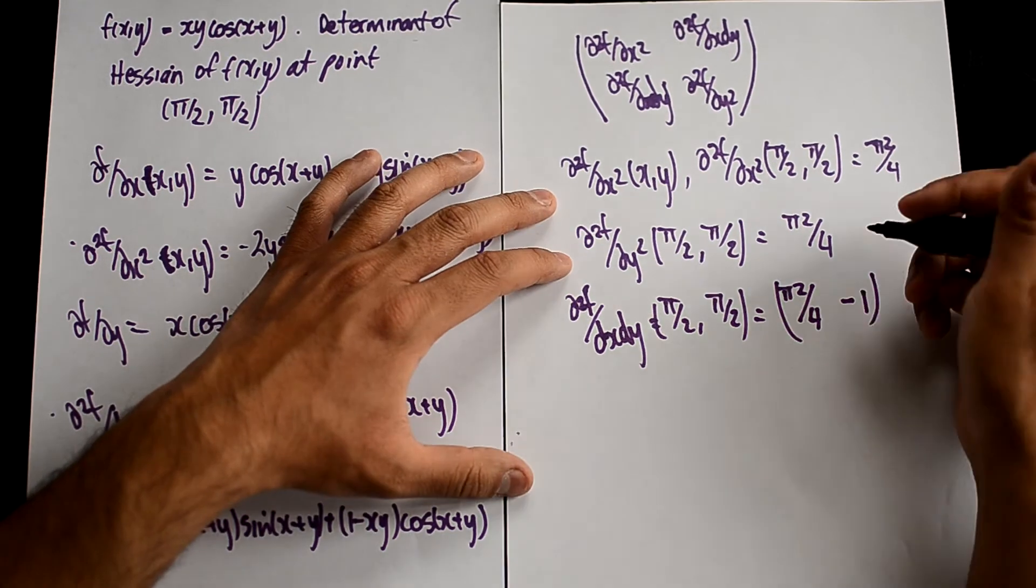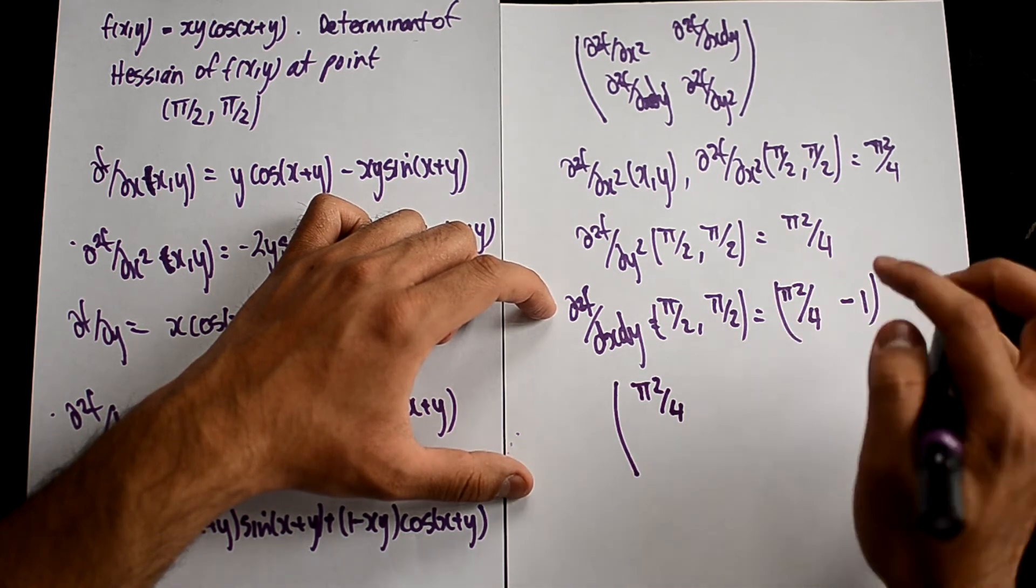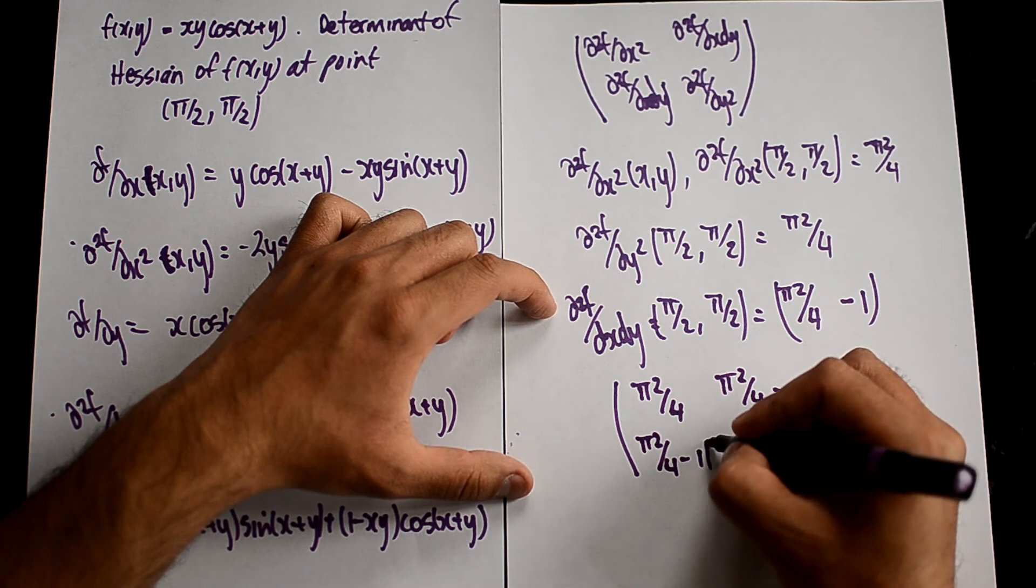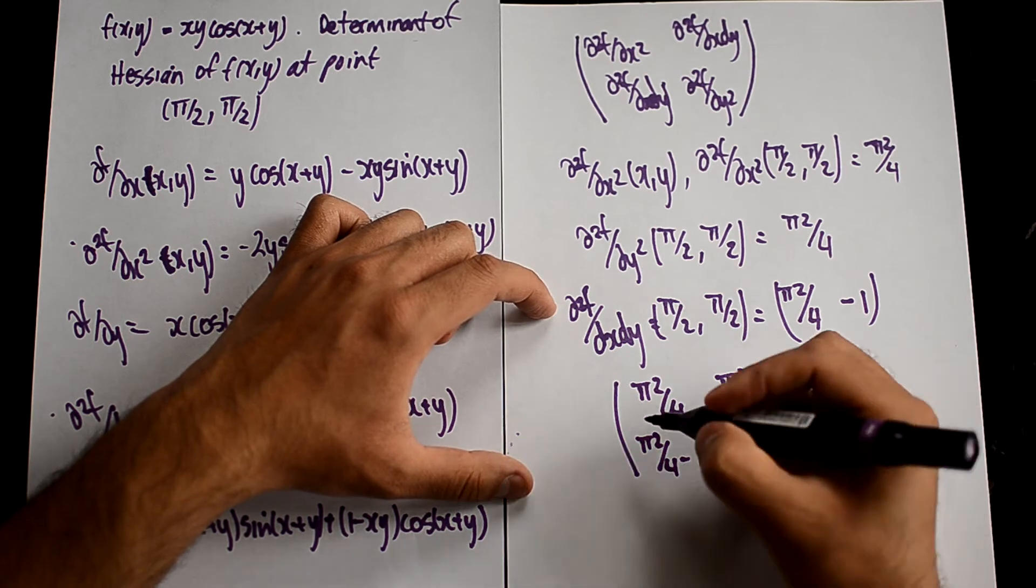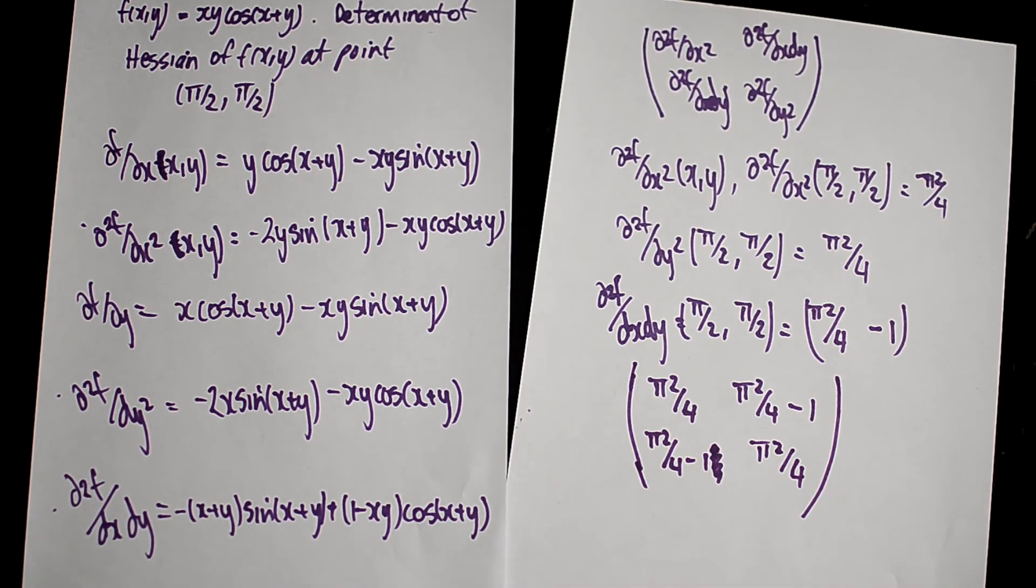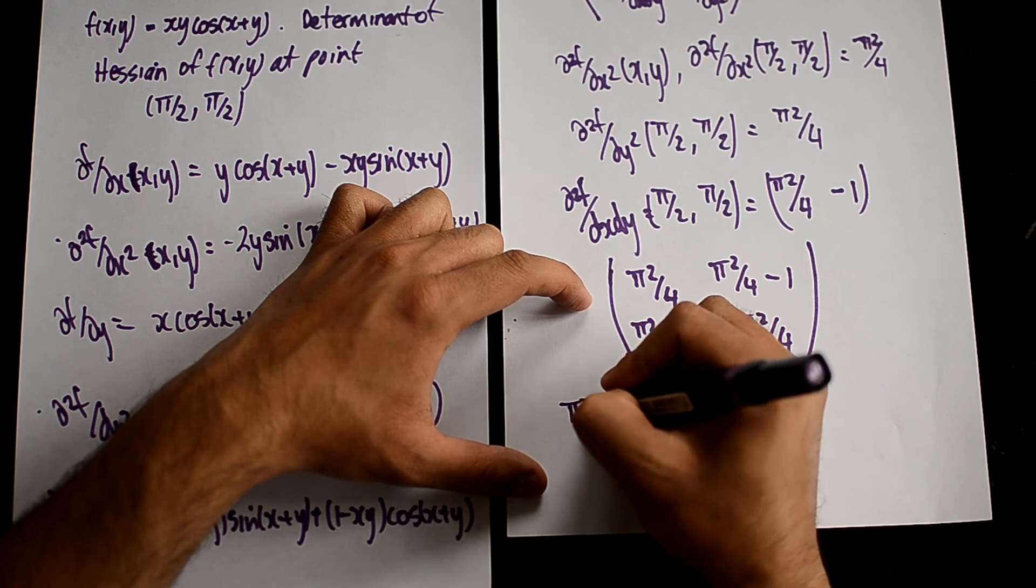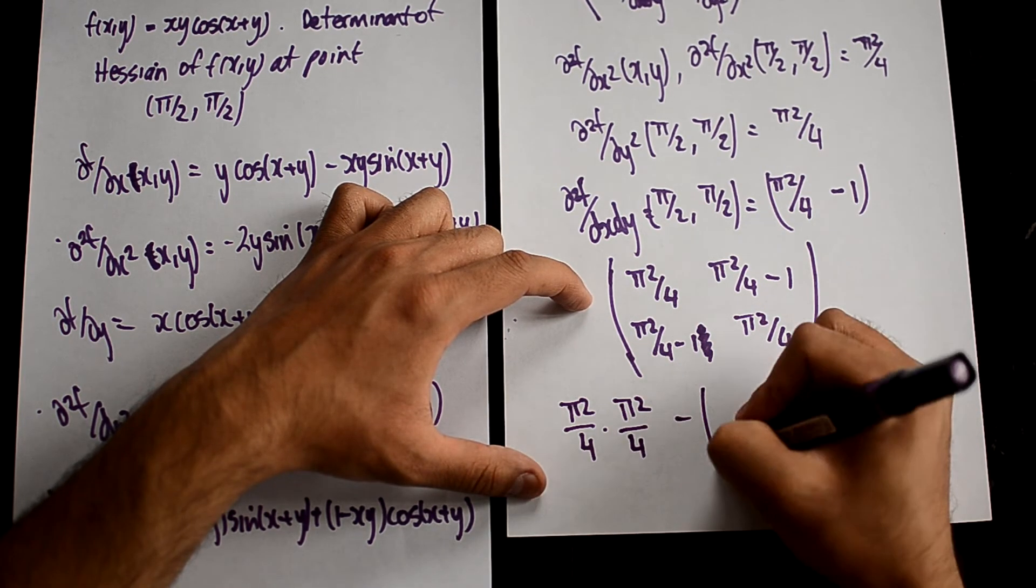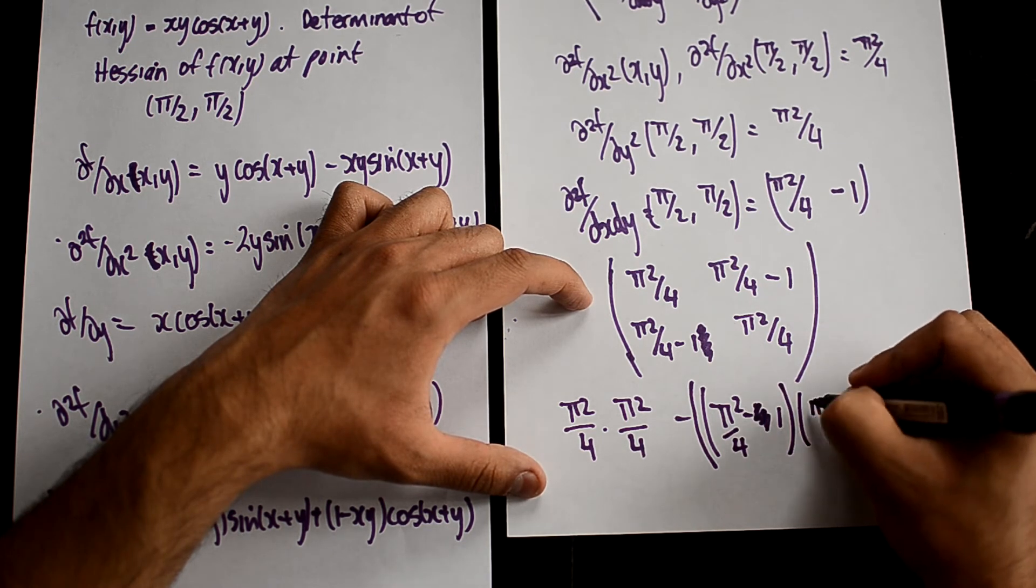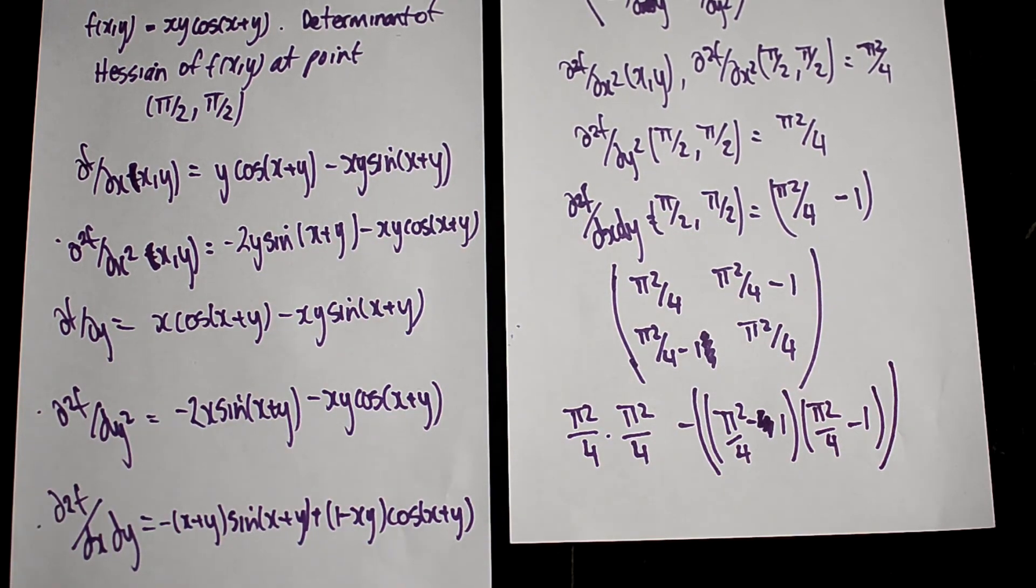Now you have to put all of this into here. So we've figured out what this is: π²/4. We know that this is π²/4 - 1. This is π²/4 - 1. And this is π²/4. So we have now got it to this point. Calculating the determinant—this is something that you should know. You multiply this by this minus the multiplication of this by this. So you should have π²/4 multiplied by π²/4 minus (π²/4 - 1)(π²/4 - 1). Remember brackets here because it's the negative of the whole thing.